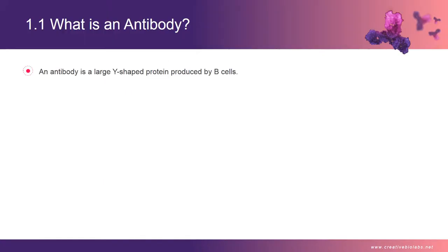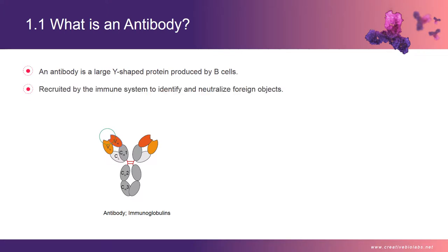Antibodies are large Y-shaped proteins which are composed of two heavy chains and two light chains. They are recruited by the immune system to identify and neutralize foreign objects like bacteria and viruses. Each antibody has a unique target known as the antigen present in the invading organism.